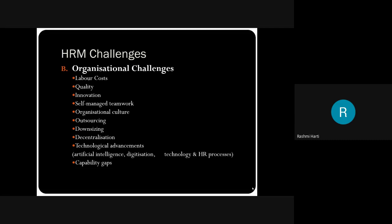Then technological advancement — when it comes to production systems, many times new machineries are brought in. You have to train your employees on the new machines, make them accept the change, and start working on them. Artificial intelligence, digitalization, technology of HR processes — all those things. Then capability gaps — your skill sets are on record at the HR department: each employee's skills, knowledge, and ability. How do you utilize all of it? That becomes the biggest challenge for the growth of the organization.